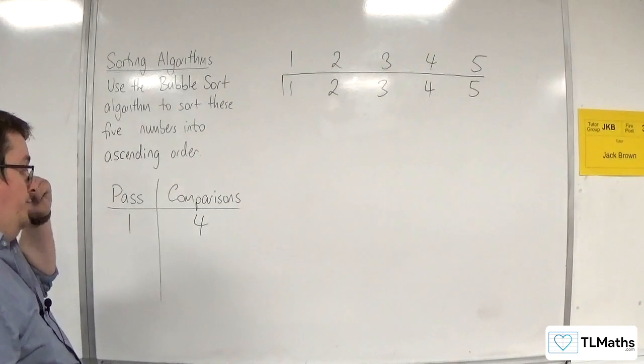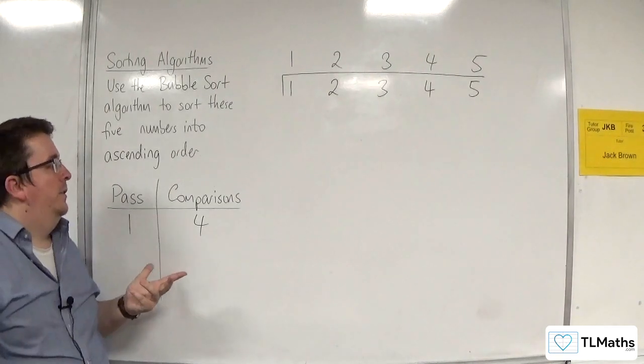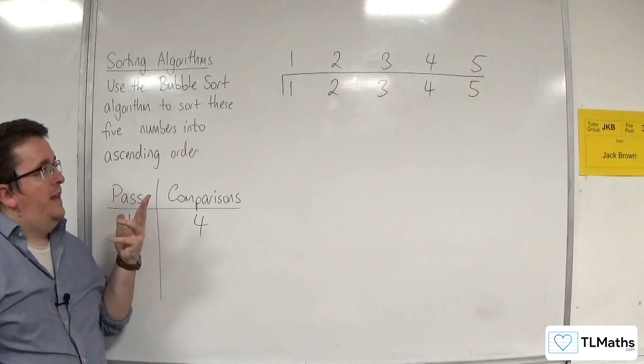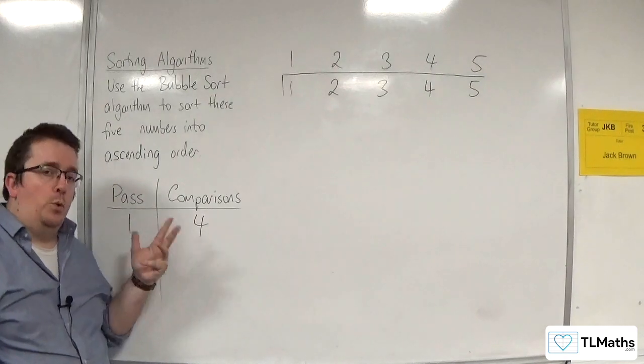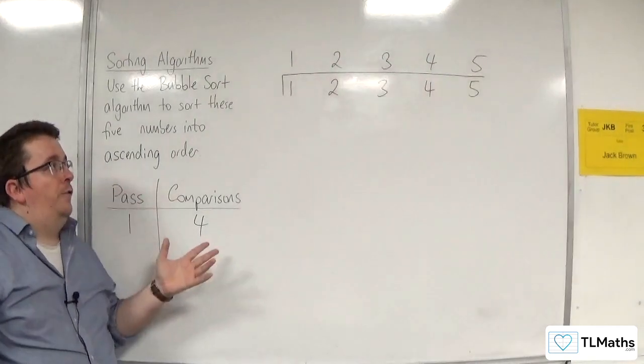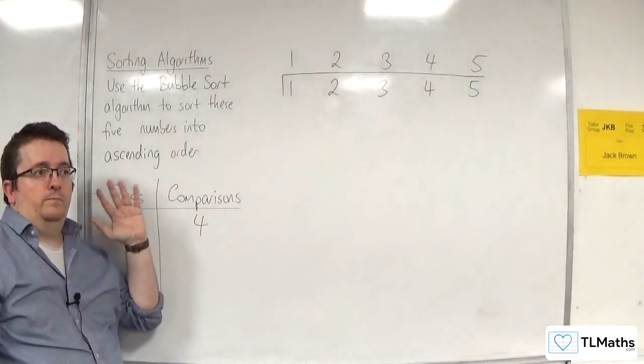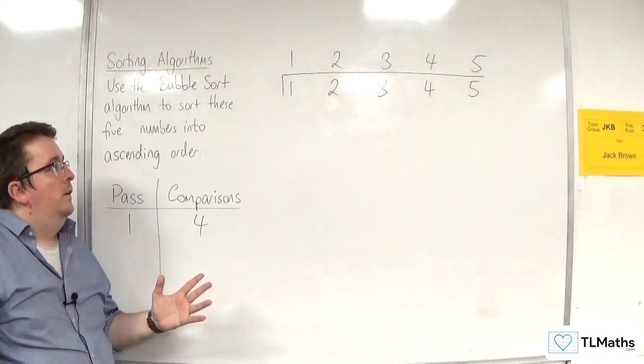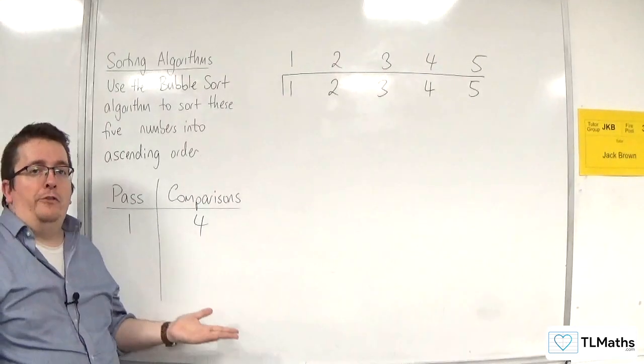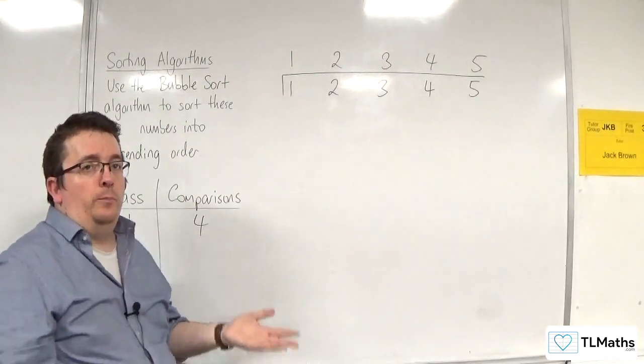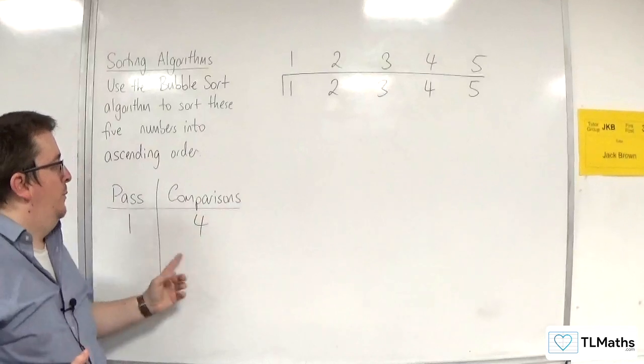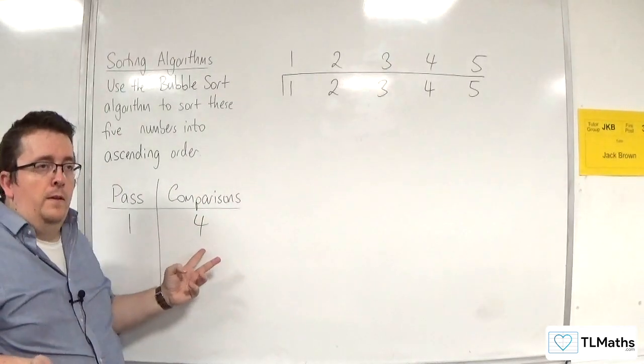Now, because of that, the number of comparisons that you'll get if the list of numbers are in perfect ascending order will always be n minus 1. So the total number of comparisons would be n take away 1. In this case, it was 5 take away 1, which is 4.